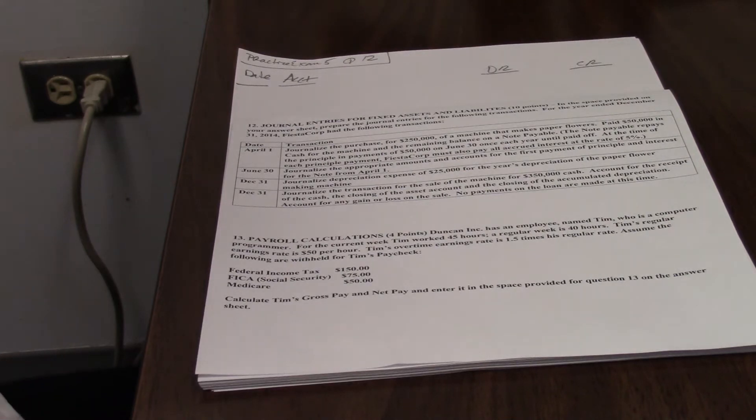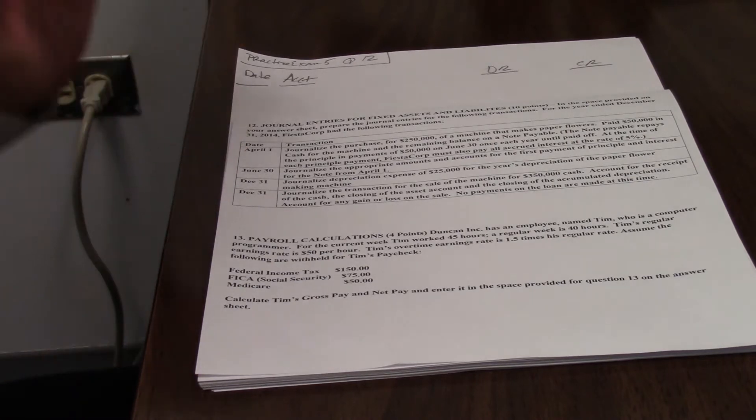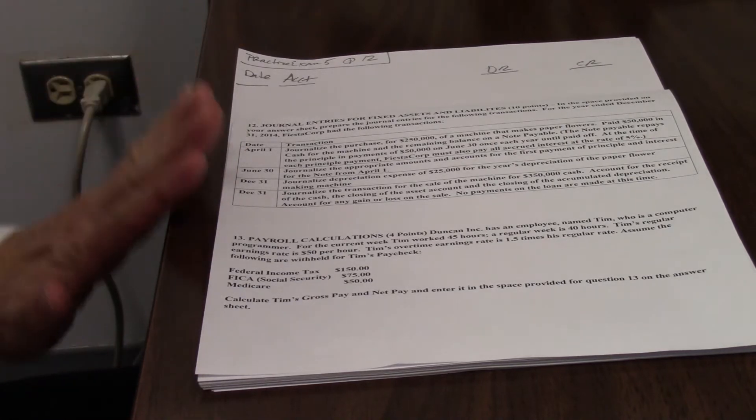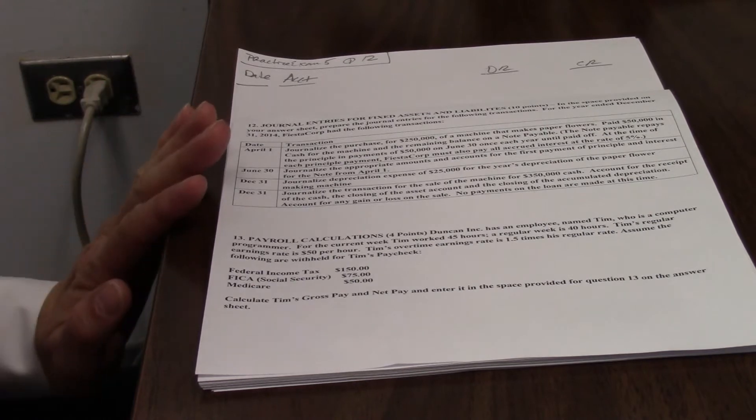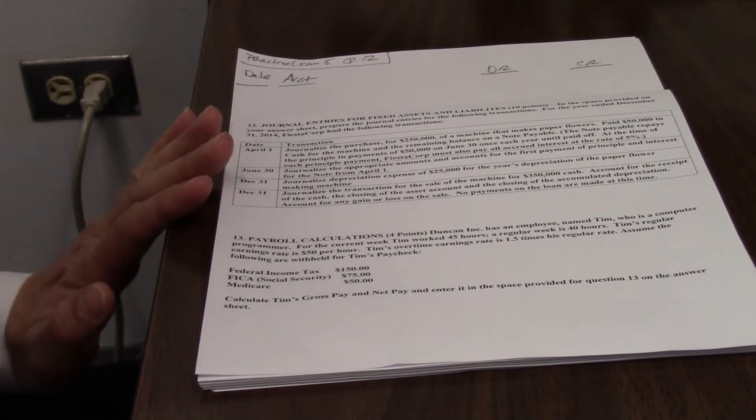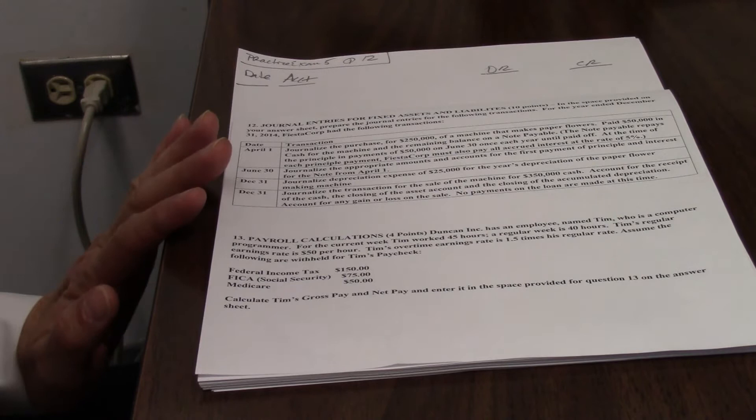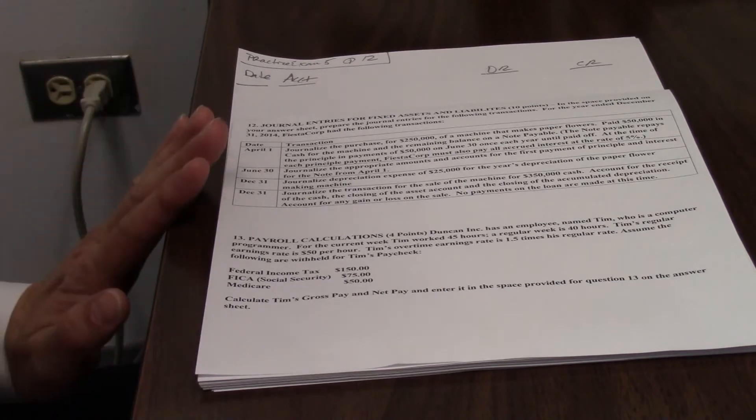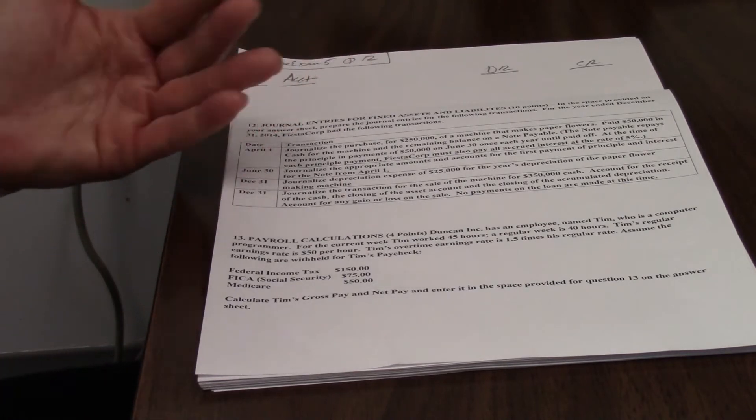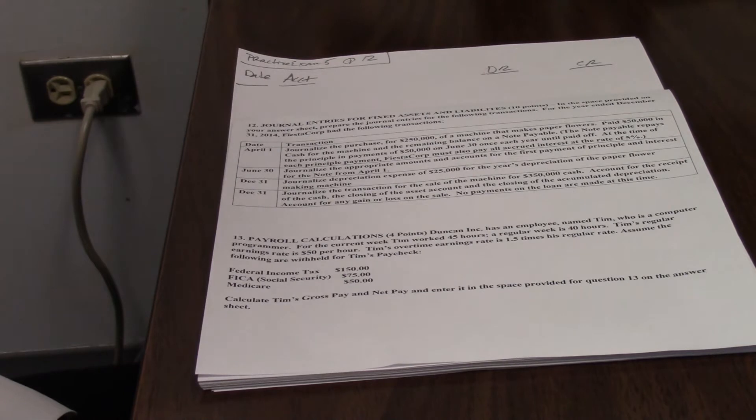Now we're going to work question 12 from practice exam 5. This particular question asks you to do some journal entries. So we're going to do some debits and some credits. We're purchasing a machine, putting notes payable on the books, and depreciating it. So it's somewhat a combination of chapters 9 and 10.